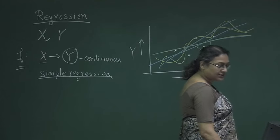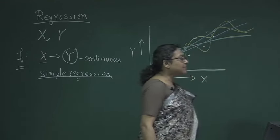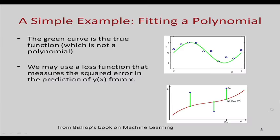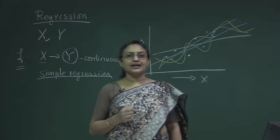Apart from linear regression, we could have other forms of regression. In this picture, the blue circles denote the different instances in the training data, and the green line is the actual function from which the points were generated. In regression, you are given these blue points — not the green line — and you are asked to come up with a function f. Suppose the red line is the function you have come up with; now we want to find out how good that line is with respect to the training examples.